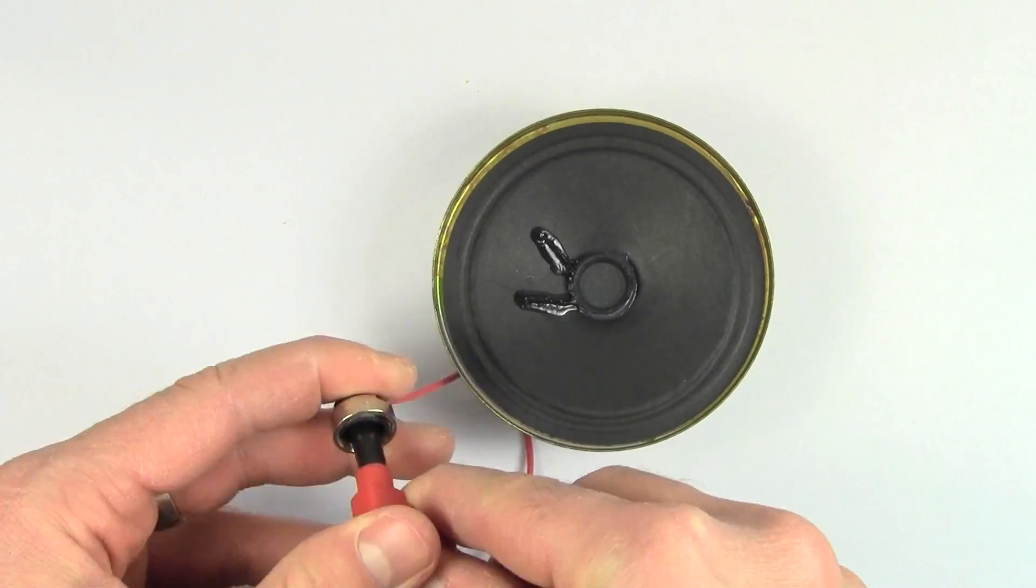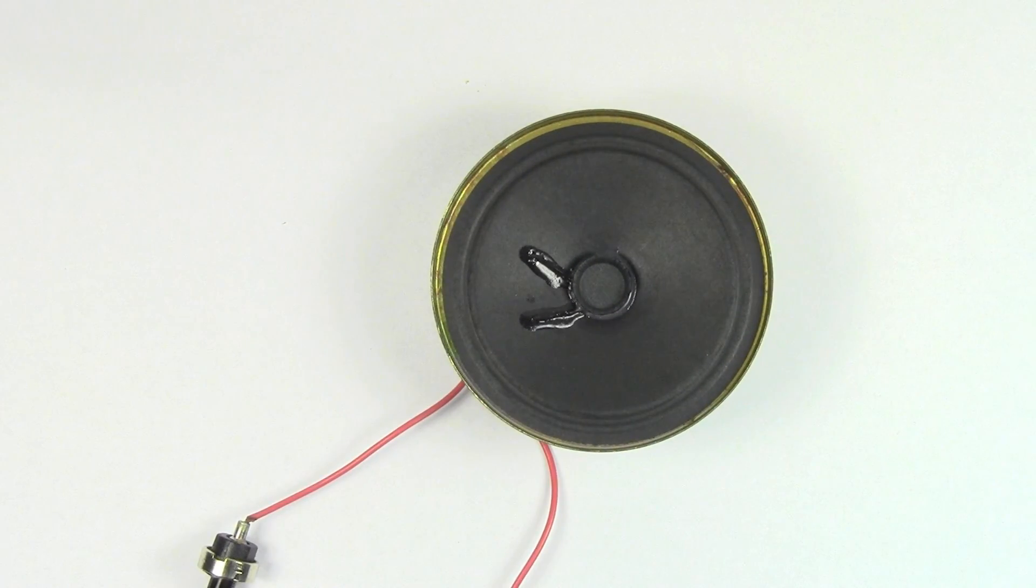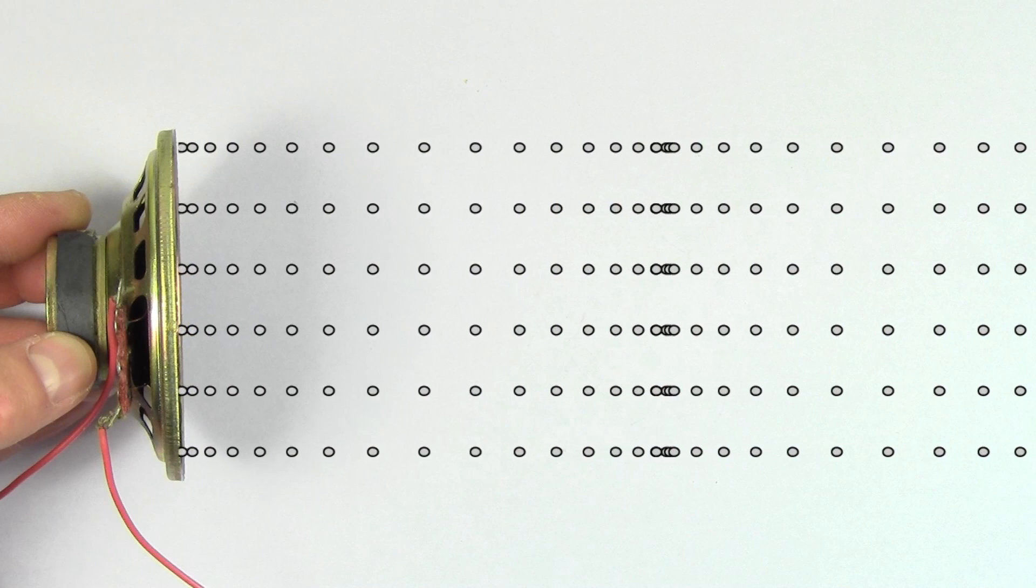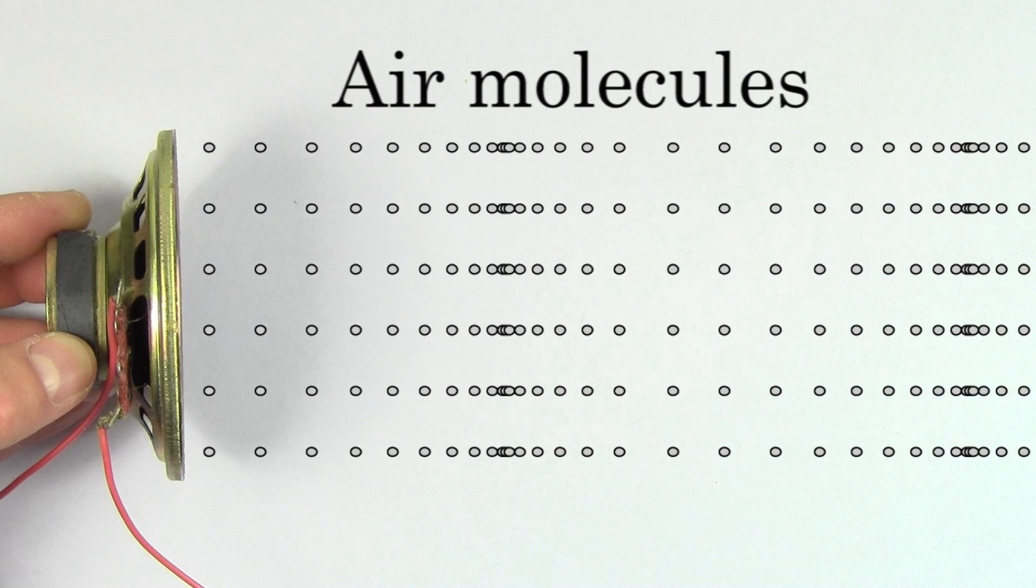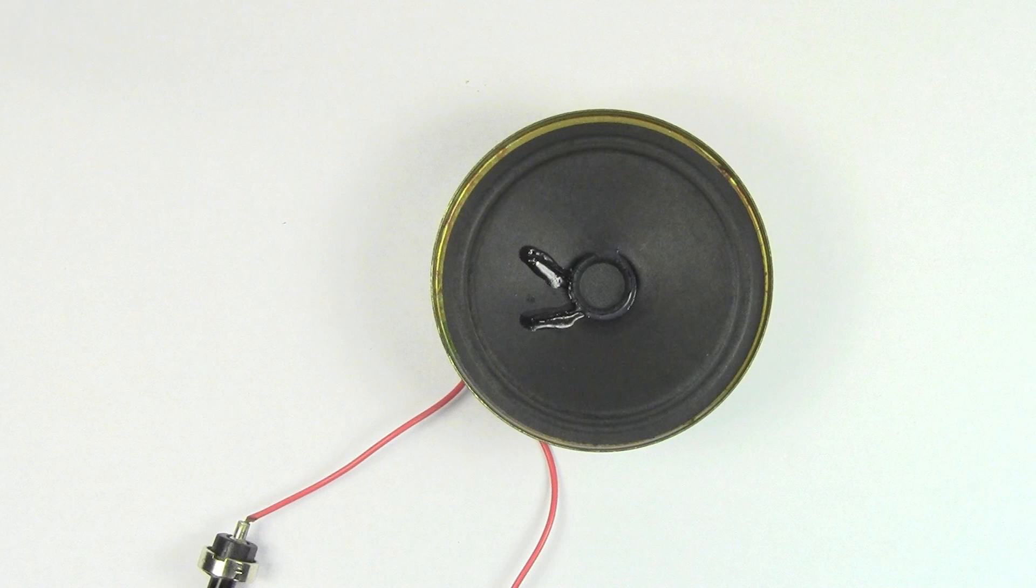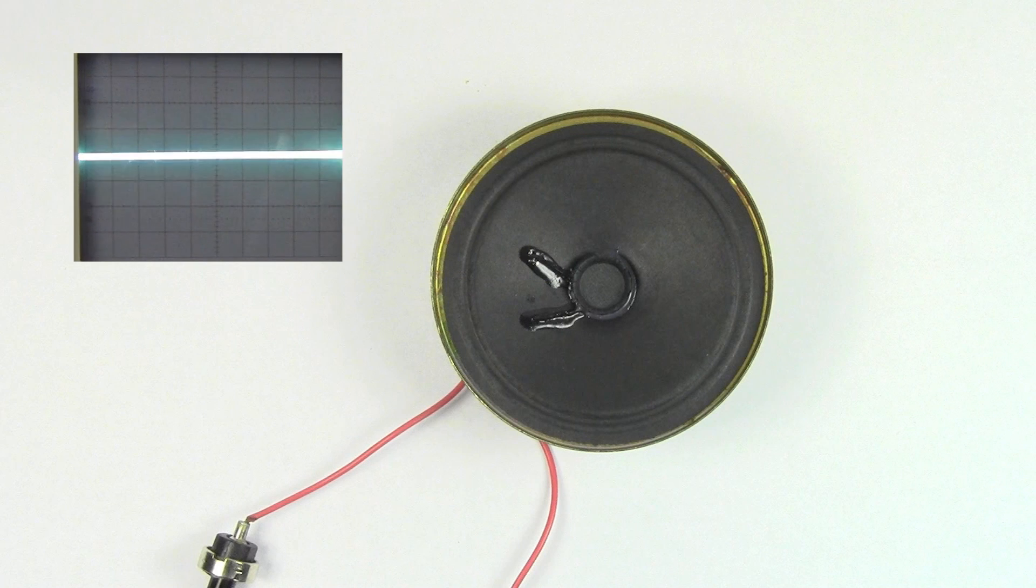This is what a sound wave sounds like. But what does a sound wave look like? Well, the air through which the sound wave is traveling looks something like this. But if you want another visual representation of the sound, we can hook this speaker up to an oscilloscope and it gives us this graph.